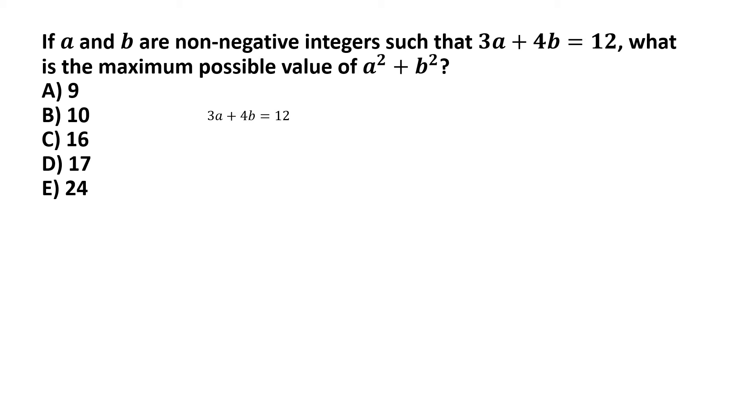Now, one thing that we note is that the variable b cannot take any value greater than 3 because if you consider the next higher integer value after 3, which is 4, for that value 4b becomes 16. And if 4b is 16, then for 3a plus 4b equal to 12 to be satisfied, that will make a a negative quantity. So, we know that a and b both are non-negative, which clearly rules out any integer values greater than 3 for the variable b.